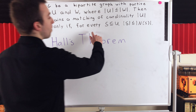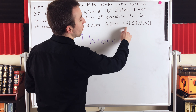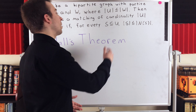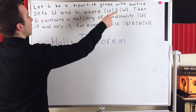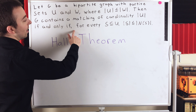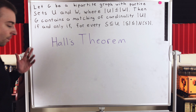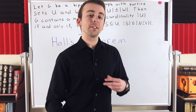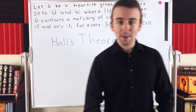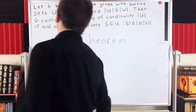This condition — every subset of the smaller partite set having as many or fewer vertices than it has neighbors — is called Hall's condition. Another way to state the theorem is that G contains such a matching if and only if G satisfies Hall's condition. Hall's theorem is sometimes called Hall's marriage theorem, and it also has a set-theoretic formulation. In this video we're proving the graph theory form.